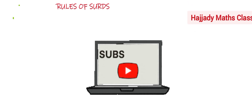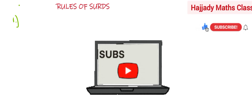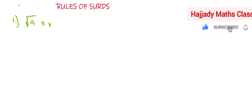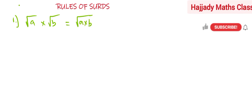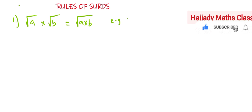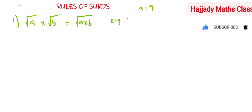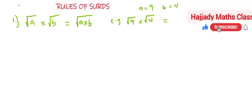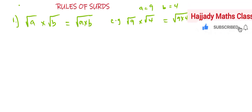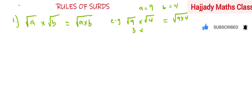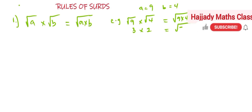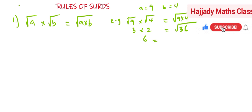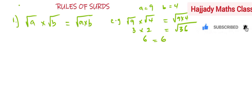Rule number one: when you have root A multiplied by root B, this is the same thing as saying root(A × B) — they can share the same root. For example, let A = 9 and B = 4. Root 9 times root 4: root 9 is 3, root 4 is 2, so 3 × 2 = 6. And root(9 × 4) = root 36 = 6. You can see that rule number one is correct.